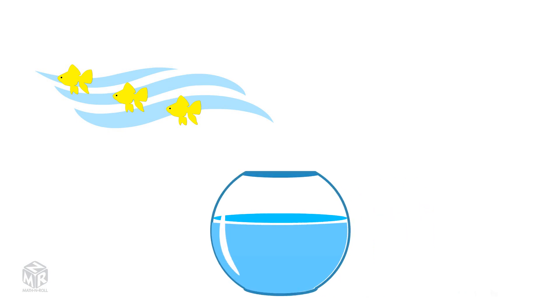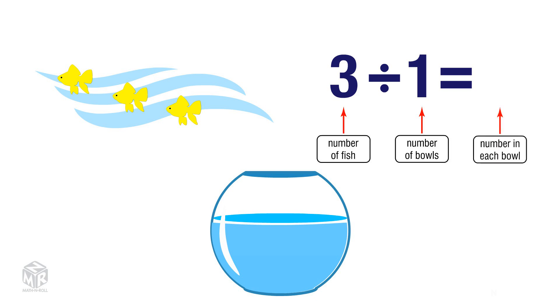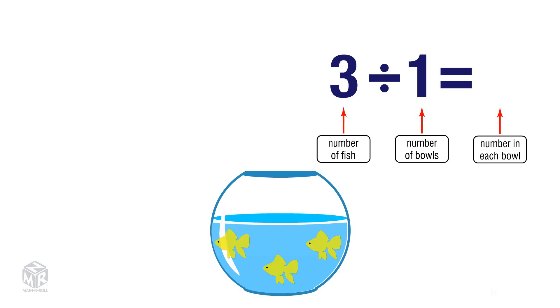Let's say we have three goldfish and we want to put the fish into one bowl. 3 represents the number of fish, and 1 represents the number of bowls. So if we divide 3 into one group, we get the number of fish in each bowl — we have three fish in each bowl.